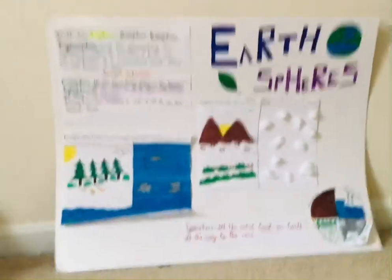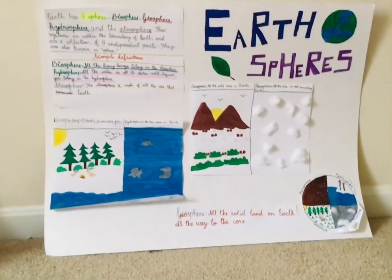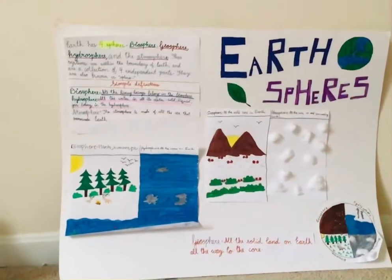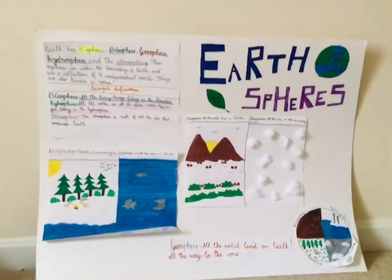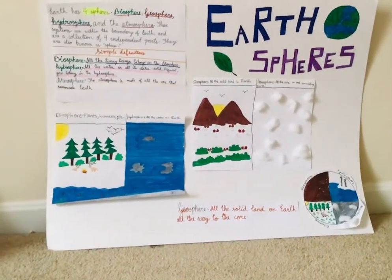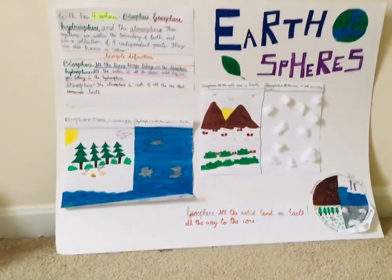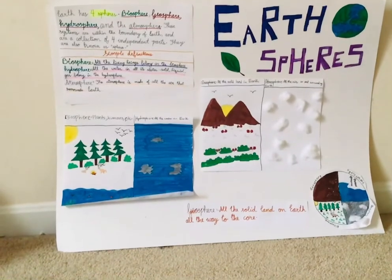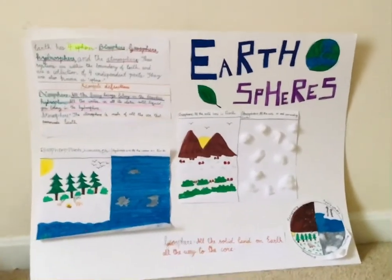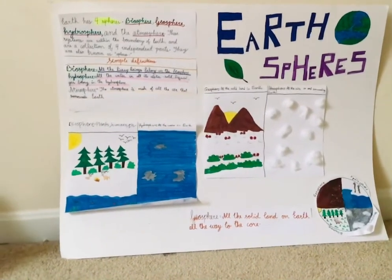So here we are at the poster. As you can see, the heading says 'Earth Spheres.' I've been calling these the Earth systems, but Earth systems and Earth spheres are the same thing — they depict the same concept. So the four spheres are the biosphere, the geosphere, the hydrosphere, and the atmosphere.